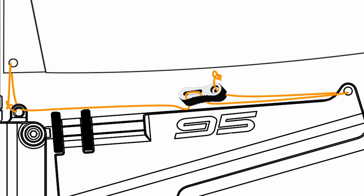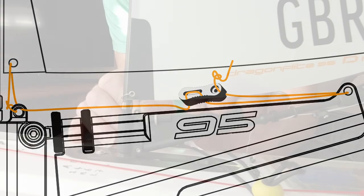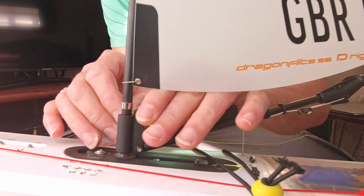Then out of this hole, finished with a stopper knot and then the knot will sit inside this recess. Now let's see an example of that on the boat.